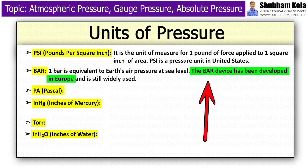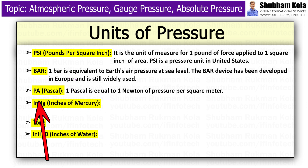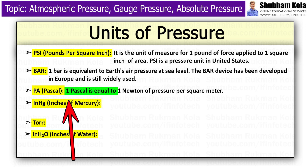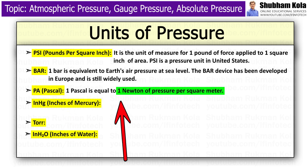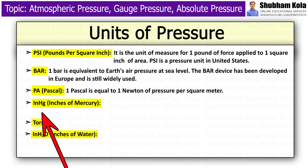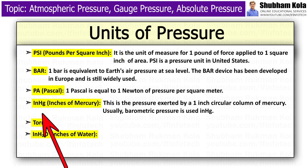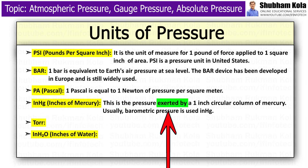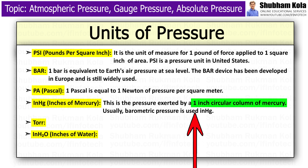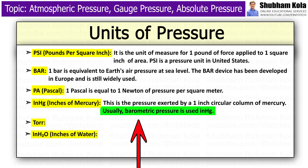The bar unit was developed in Europe and is still widely used. Next is Pascal. One Pascal is equal to one newton of pressure per square meter. Next is inHg, that is inches of mercury. It is the unit of pressure exerted by a one-inch circular column of mercury. Barometric pressure is usually measured in inHg.